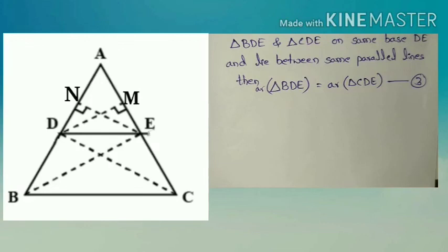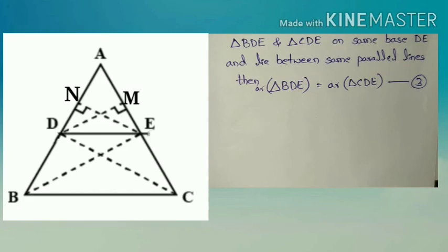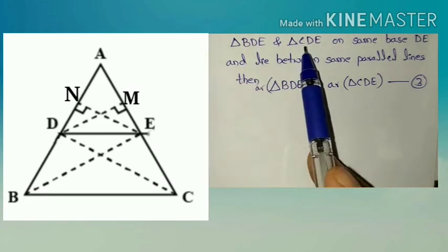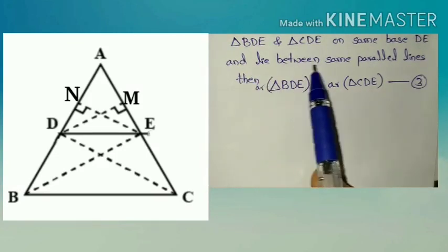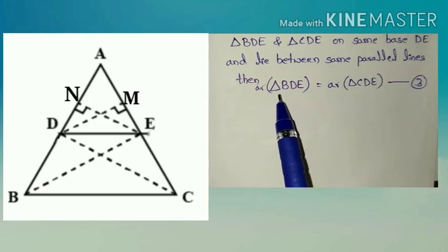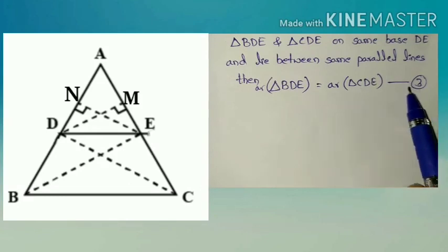We studied in 9th class that if two triangles on the same base and lie between the same parallel lines then they having the equal area. Similarly here also triangle BDE and triangle CDE on same base that is DE and lie between the same parallel lines then their area of triangles are equal. So area of BDE equal to area of CDE. That is equation number 3.